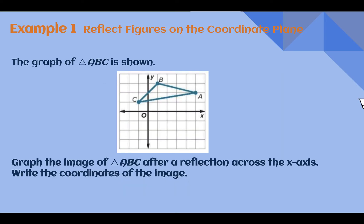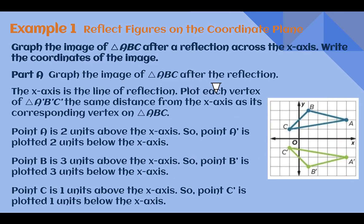Example 1: Reflect figures on the coordinate plane. The graph of triangle ABC is shown. Graph the image of triangle ABC after a reflection across the x-axis and write the coordinates of the image. So if we're reflecting this, we want it to go across the x-axis. When we're doing reflections, the first step is to show where the line of reflection is so that we know what we're flipping our shape over. Here, if we're trying to graph our image from our pre-image, we can look at how far away our pre-image is from our line of reflection.